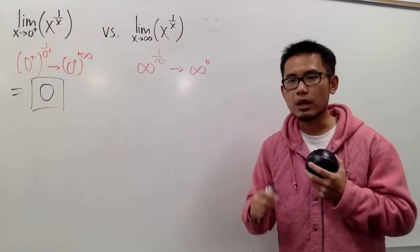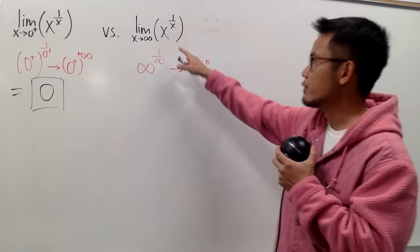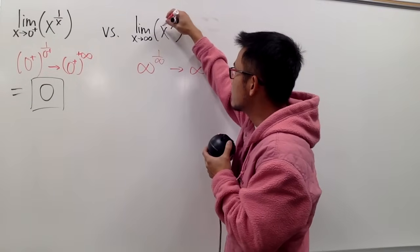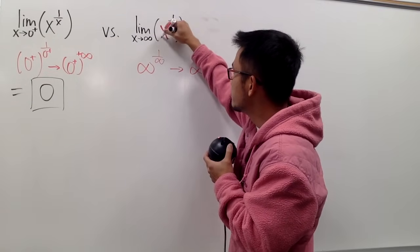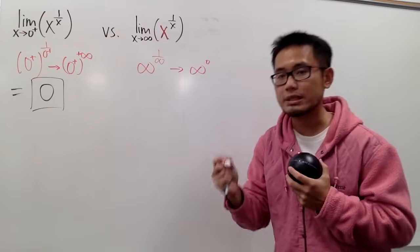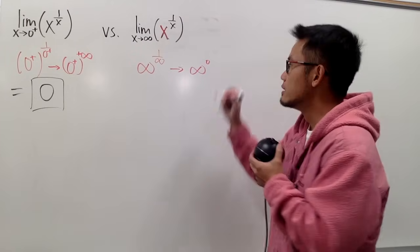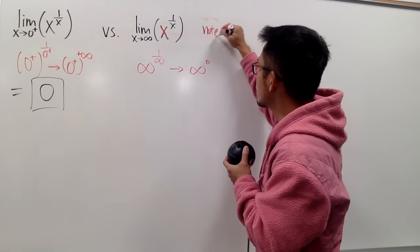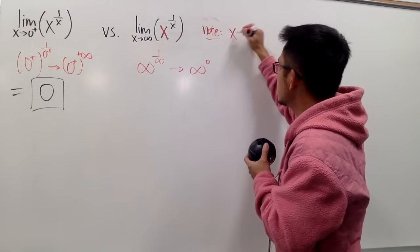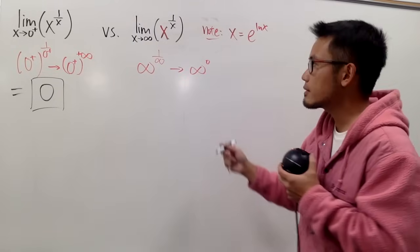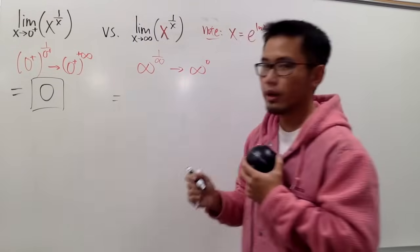But here is how we are going to attack this question. Just like in my previous video about how to show you guys how to differentiate x to the 1 over x power. Let me just take a look of the x right here for the base. Because we like to work with base e when we have an exponential situation, right? So, notice, let me just put down a note right here. x, it's the same as e to the ln x power, all right?